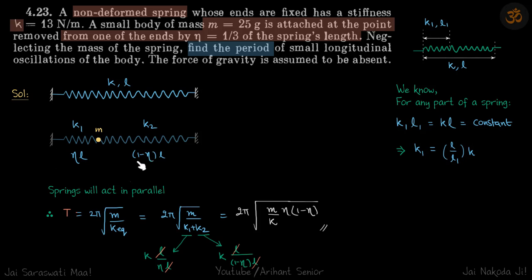Obviously the rest of the length becomes one minus eta times l. We need to find the period of small oscillations of this body m. Now because we are breaking this spring into two components.